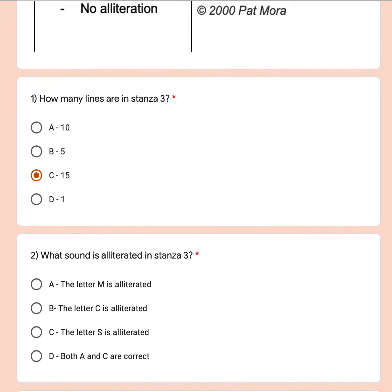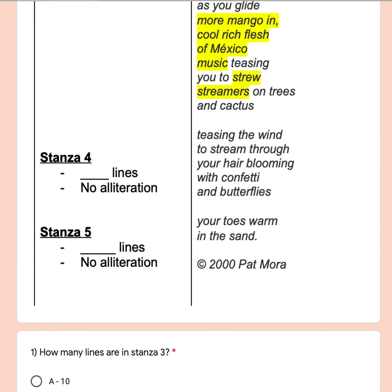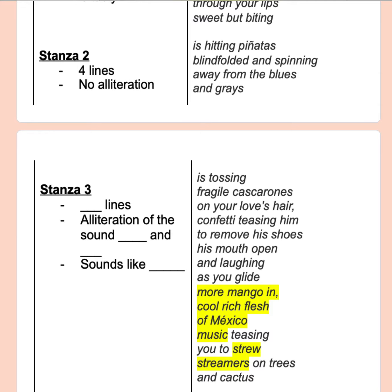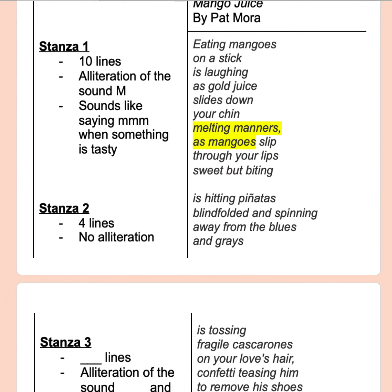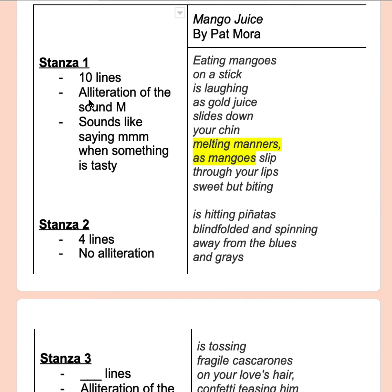Question number 2: What sound is alliterated in stanza 3? Remember that alliteration is the repetition of the same beginning letter or sound at the beginning of a word. For example, in stanza 1, we saw the alliteration of the sound M in the line, melting manners as mangoes slip.